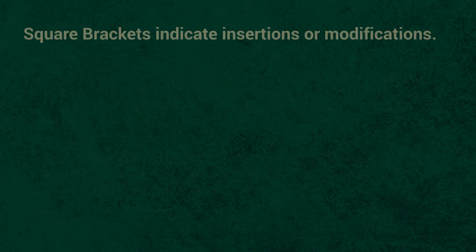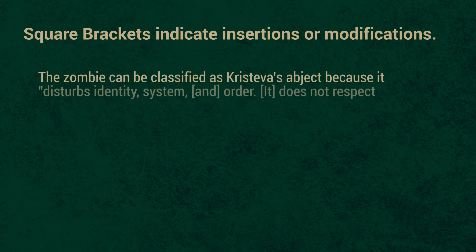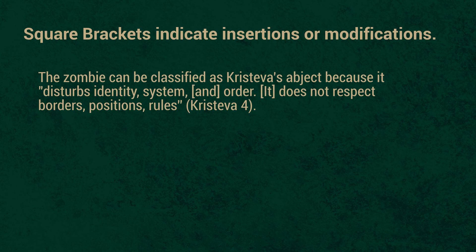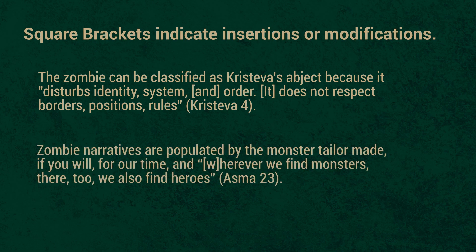Square brackets indicate insertions or modifications. You use them to add your own words or make changes within a quote to provide clarity or context. This is often done to correct grammar, add capitalization, or replace a pronoun for clarity. In the first example, words are added to make the words of Julia Kristeva work within the structure of the sentence. In the second example, brackets are used to deal with a capitalization rule.